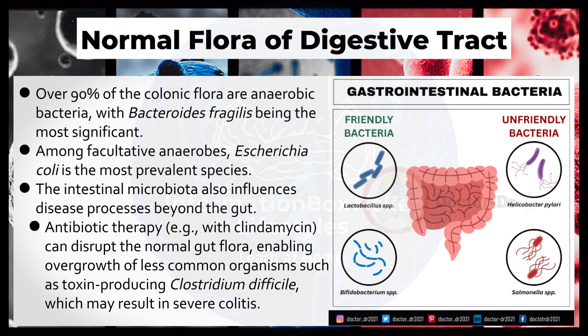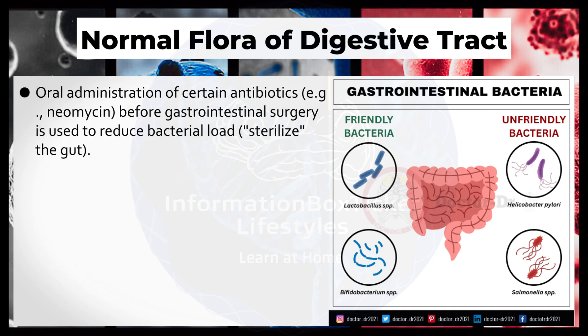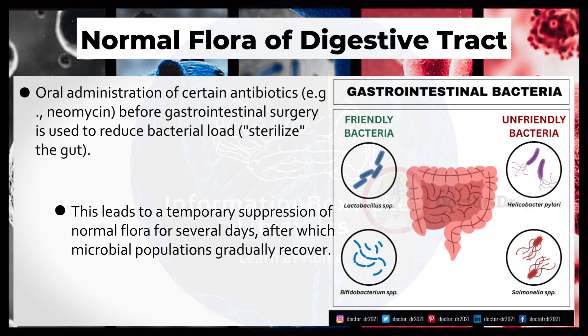Antibiotic therapy, e.g., with clindamycin, can disrupt the normal gut flora, enabling overgrowth of less common organisms such as toxin-producing Clostridium difficile, which may result in severe colitis. Oral administration of certain antibiotics, e.g., neomycin, before gastrointestinal surgery is used to reduce bacterial load and sterilize the gut. This leads to a temporary suppression of normal flora for several days, after which microbial populations gradually recover.